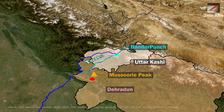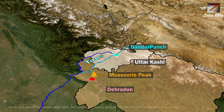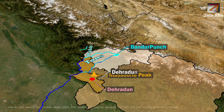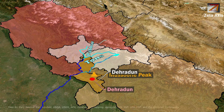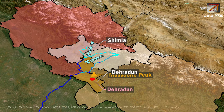The Tons river originates from the Bandar Pooch glacier in Uttarkasi district and flows in the Garhwal region. In Dehradun district, the Pabba river joins the Tons river, where the Pabba river originates in Himachal Pradesh in Simla district. Pabba is also the westernmost river that drains east to the Ganges.